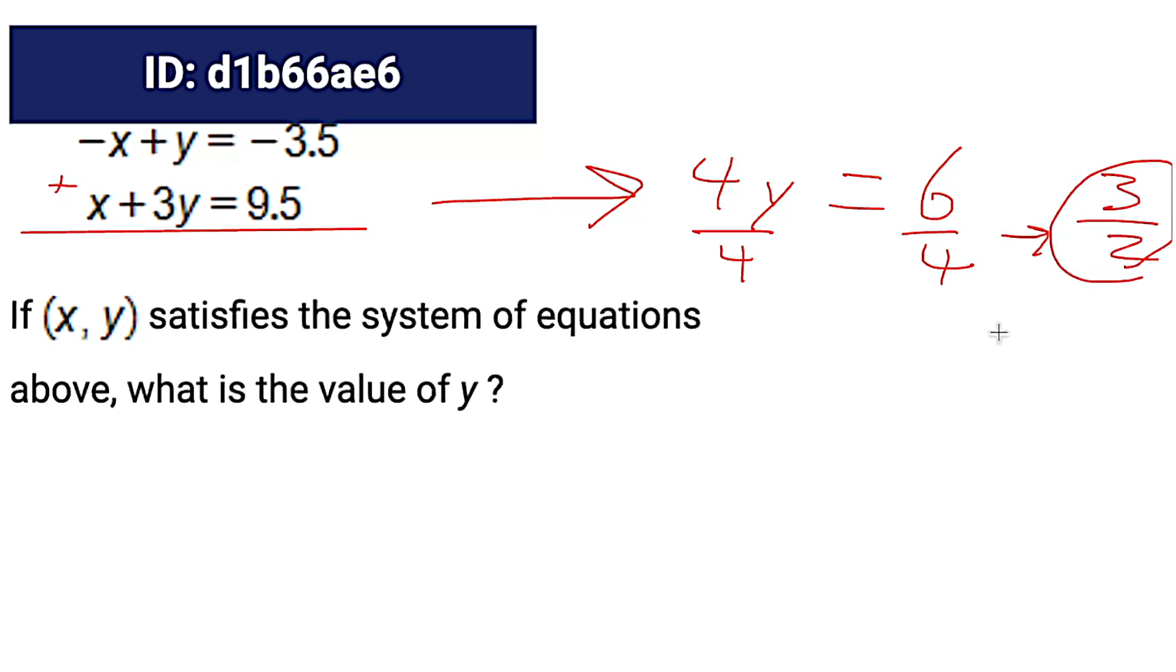So we get 6 over 4, aka 3 over 2. And 3 over 2 is an acceptable answer, but that's also the same as 1.5, right? So we can get our answer that way, maybe even faster, depending on how comfortable you are. So again, the tip is use Desmos when it's faster for you. It's really going to depend on what sort of tricks you know outside of that calculator.